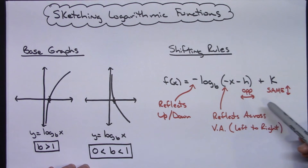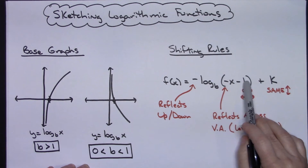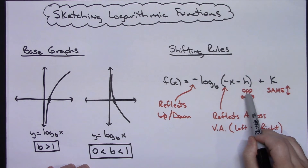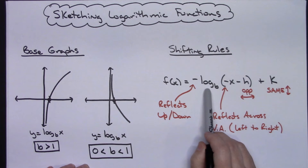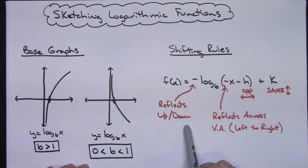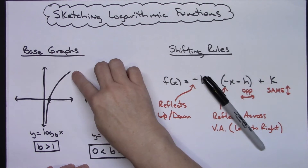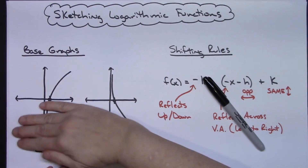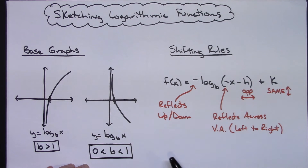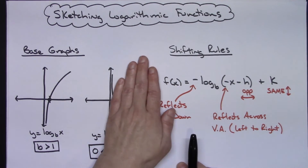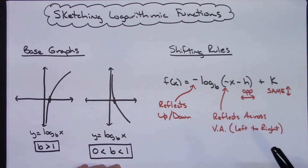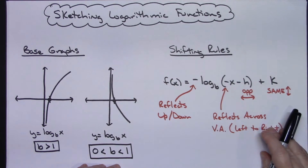Now basic shifting rules that apply not only to logarithmic functions but to all functions: if you have a number on the inside of the function, you shift opposite left or right. If you've got a number on the outside, that tells you how the graph shifts up or down. A negative in front of the log reflects it up and down. A negative on the inside reflects across your vertical asymptote left to right.